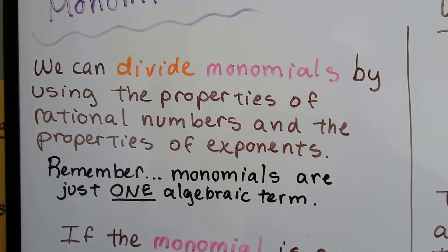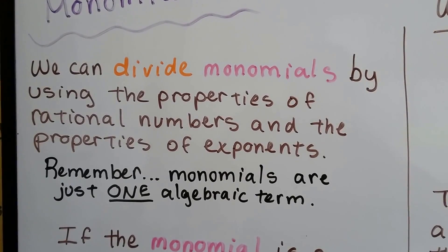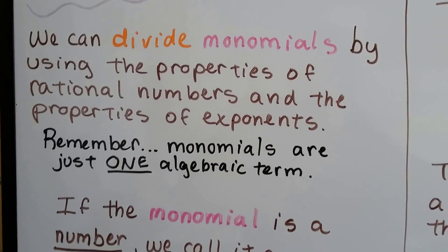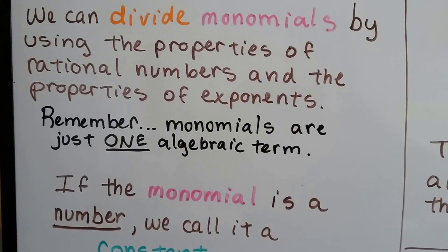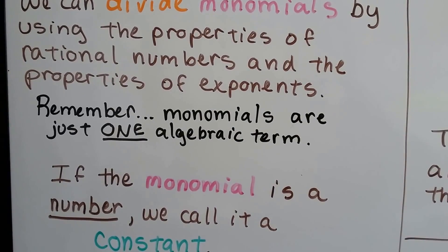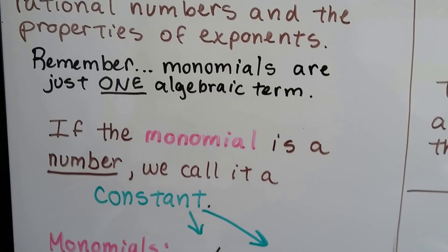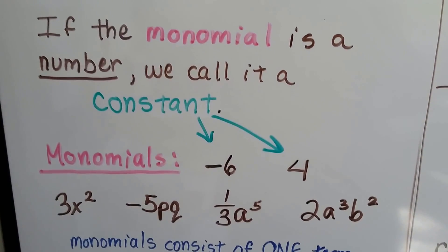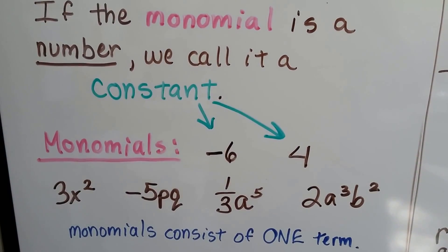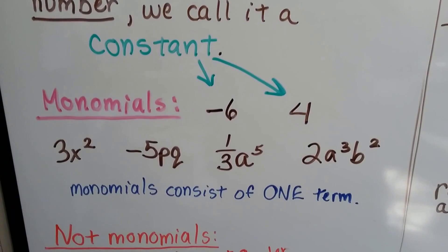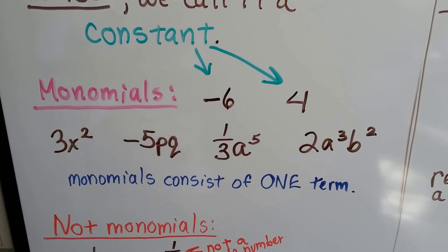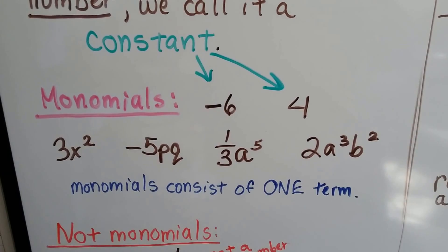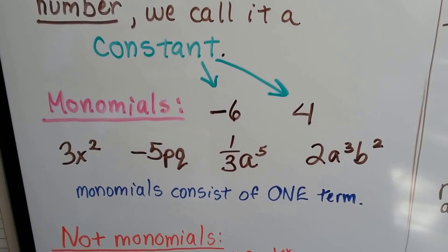We can divide monomials by using the properties of rational numbers and the properties of exponents. We've covered those in the last few videos. Remember, monomials are just one algebraic term. If the monomial is a number, we call it a constant. So negative 6 and 4 are constants, and they're also monomials. And 3x to the second power is a monomial, so is negative 5pq. So is one-third a to the fifth power.